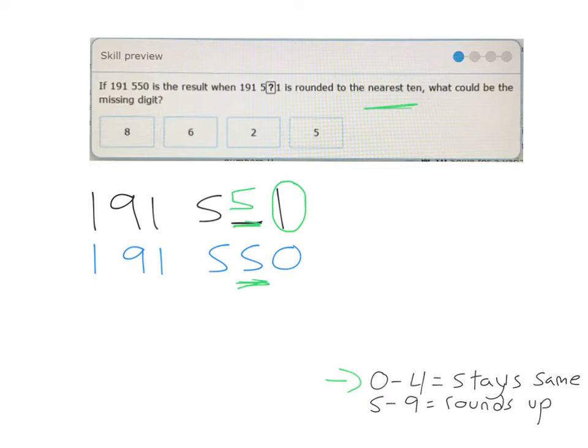And then let's ask ourselves if that could make sense. Is 191,551 rounded to the nearest 10? So would it be close to 191,550? Yes, that definitely makes sense. So I'm going to say the value previously was a 5.